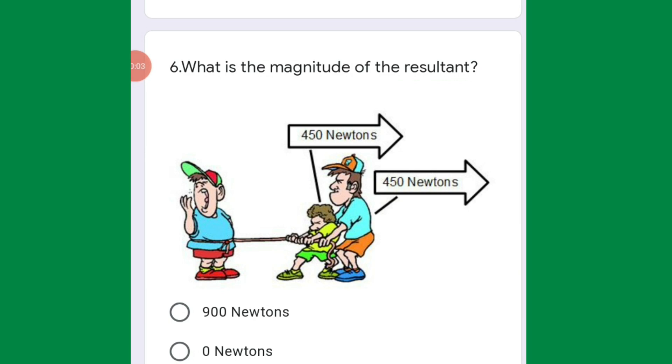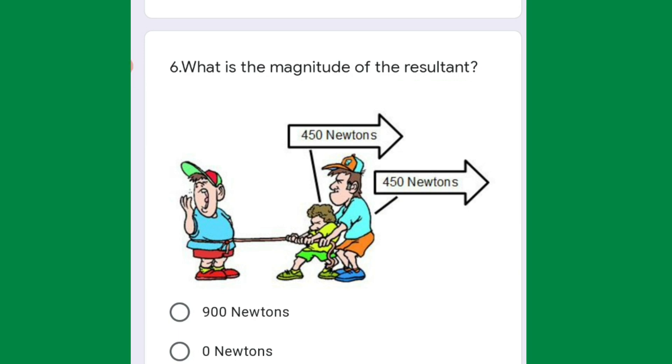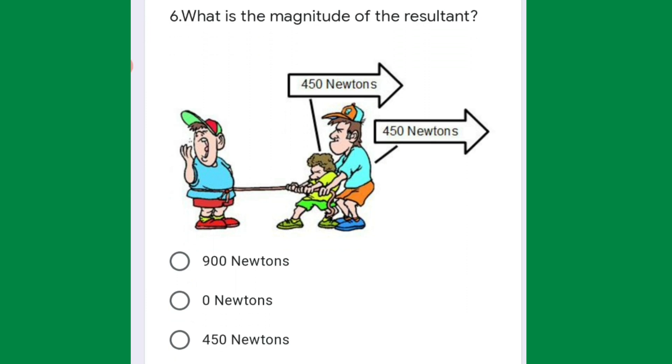This question: what is the magnitude of the resultant? First we have to see in which direction forces are working. Both the forces are working in the same direction, so both will have the same symbol. So the resultant force will be 450 plus 450, that is 900 newtons. Let us see the next question.